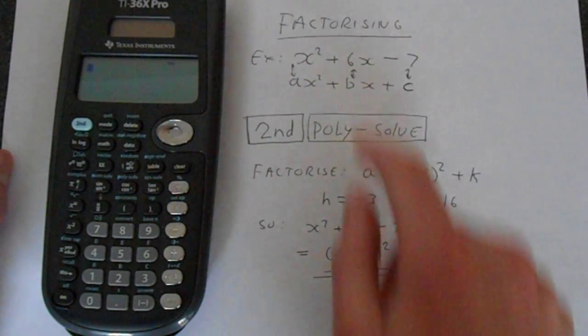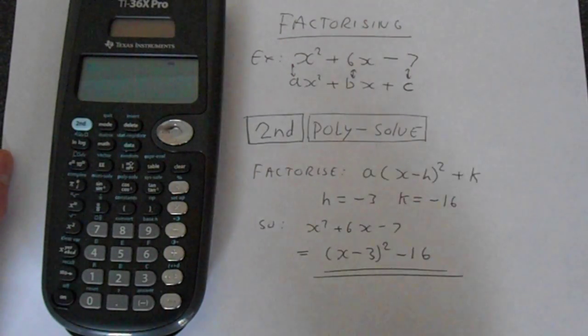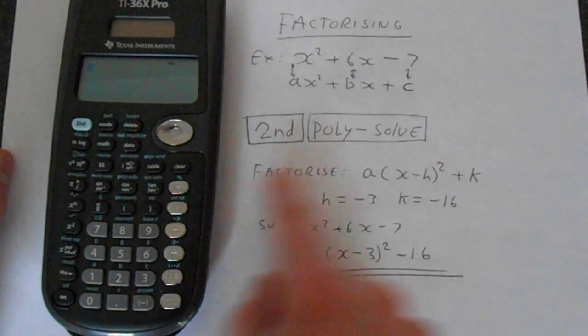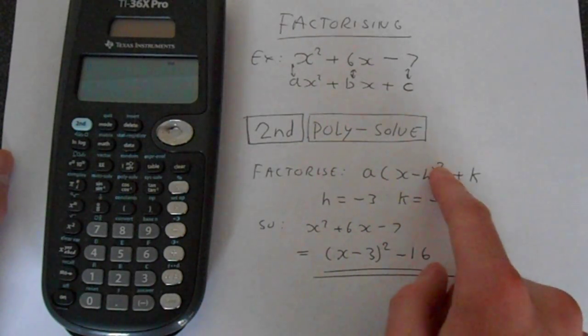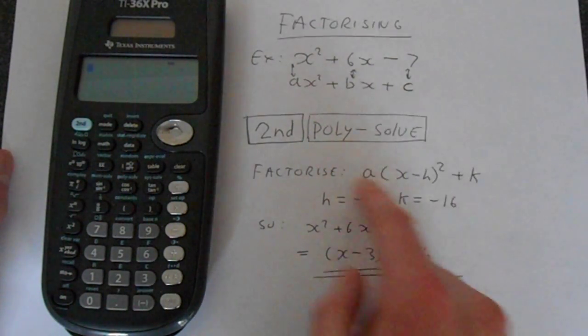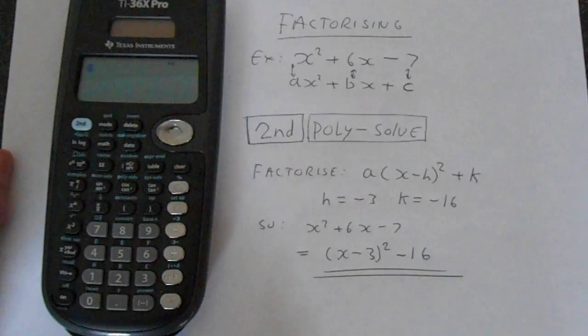For example, c is of course minus 7, b is 6, and a is 1. And you can factorize that into the form a times x minus h squared plus k. And the calculator can take a, b, and c and it can solve for h and k.